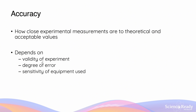In general, accuracy depends on a few things. First, it depends on the validity of the experiment — that is, the method or procedure. If the procedure is invalid, it will likely produce inaccurate results. Accuracy also depends on the degree of error, referring to both systematic and random error, and on the sensitivity of the equipment used to measure the results.